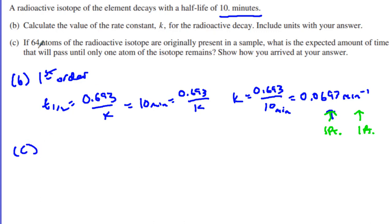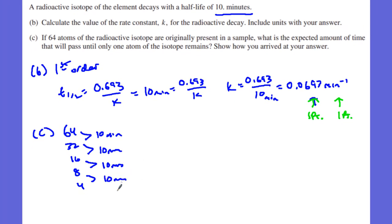Last but not least, they said if 64 atoms of a radioactive isotope are originally present, what is the expected amount of time that will pass until only one isotope remains? Remember, I like to do it this way. We get 64, that becomes 32, and that will take 10 minutes to get from 64 to 32. Then we're going to go down to 16, that's 10 more minutes. Then we get 8, that's 3 half-lives, 10 minutes. Down to 4, that's 10 minutes. Down to 2, that's 10 minutes. Down to 1, that's 10 minutes. So you can see 10, 20, 30, 40, 50, 60 total minutes to get down to just 1 atom, and that is worth 1 point.